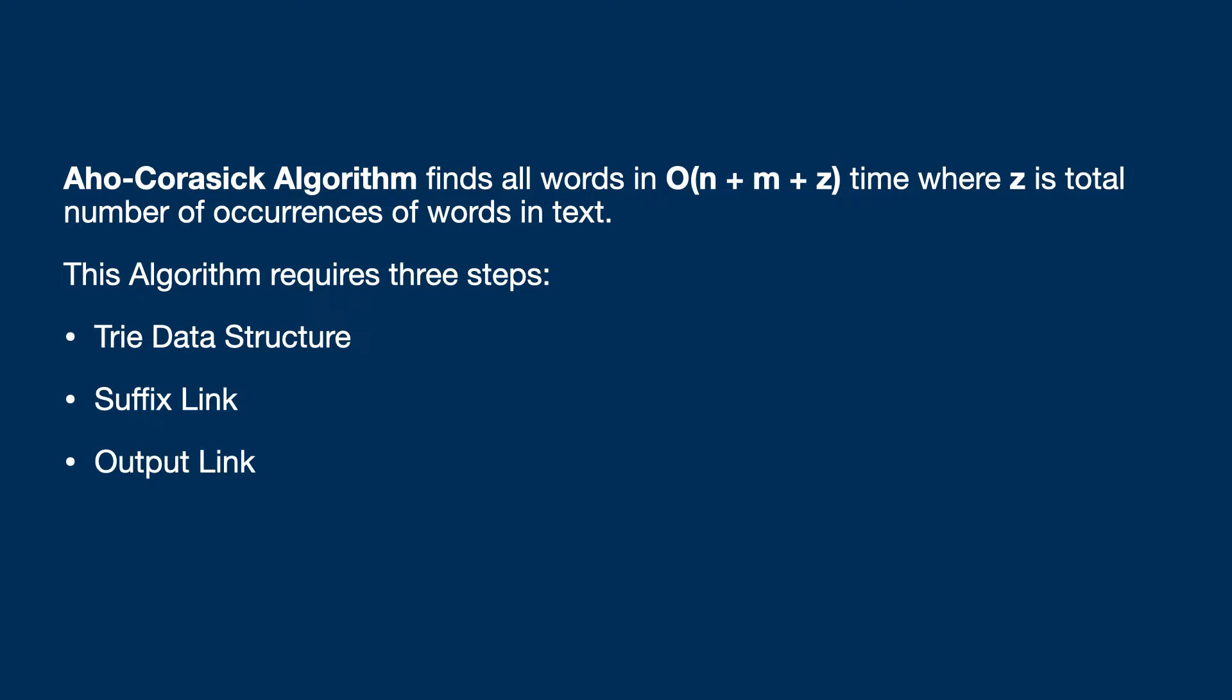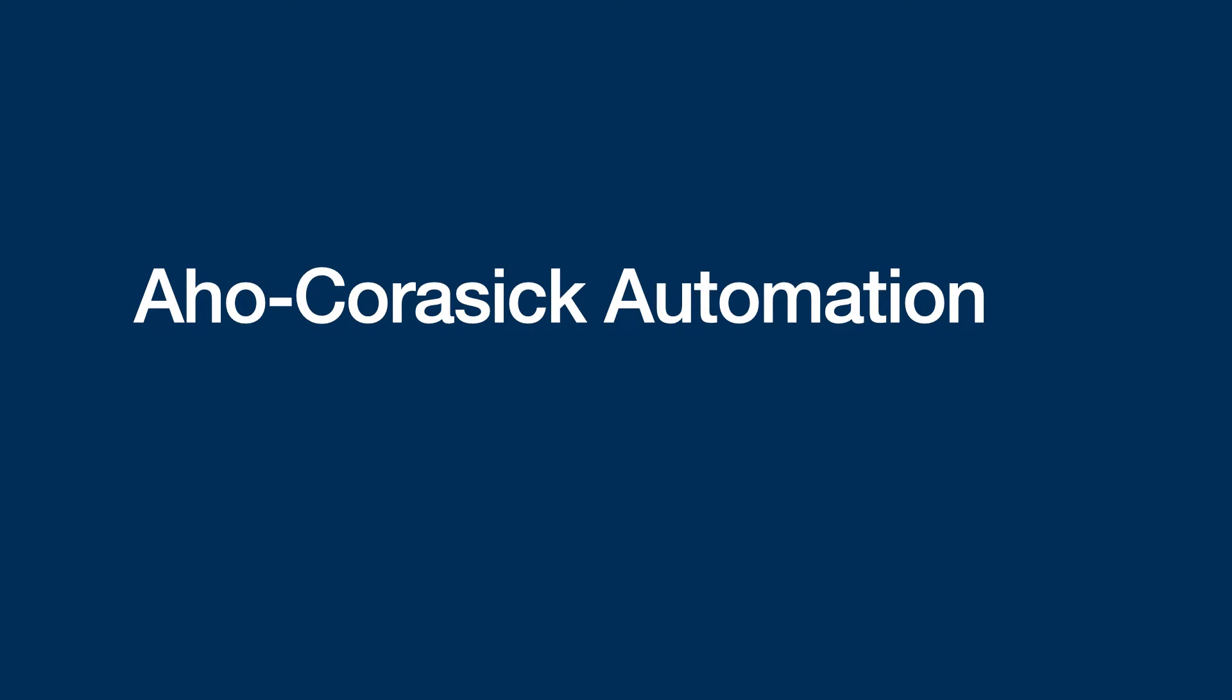This algorithm requires three steps. First one is constructing trie data structure, second one is adding suffix links to it and then output links. This whole process of building all these is known as Aho-Corasick automation. Let's go into Aho-Corasick automation in detail.